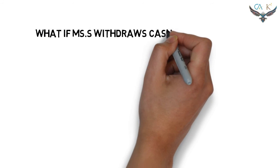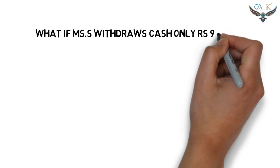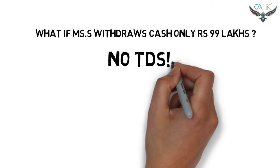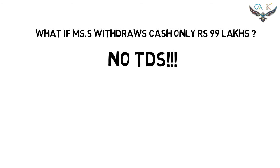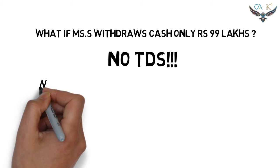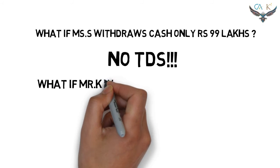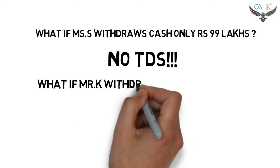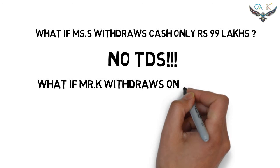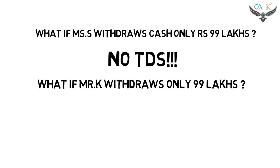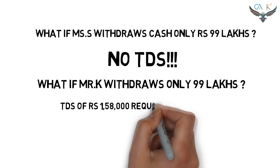Now consider some changes to this example. If Miss S made cash withdrawals of only 99 lakhs, there will be no TDS for her, as she has properly filed her income tax return. If Mr. K made cash withdrawals of only 99 lakhs, TDS will still be deducted, since he has not filed returns for three consecutive preceding years.